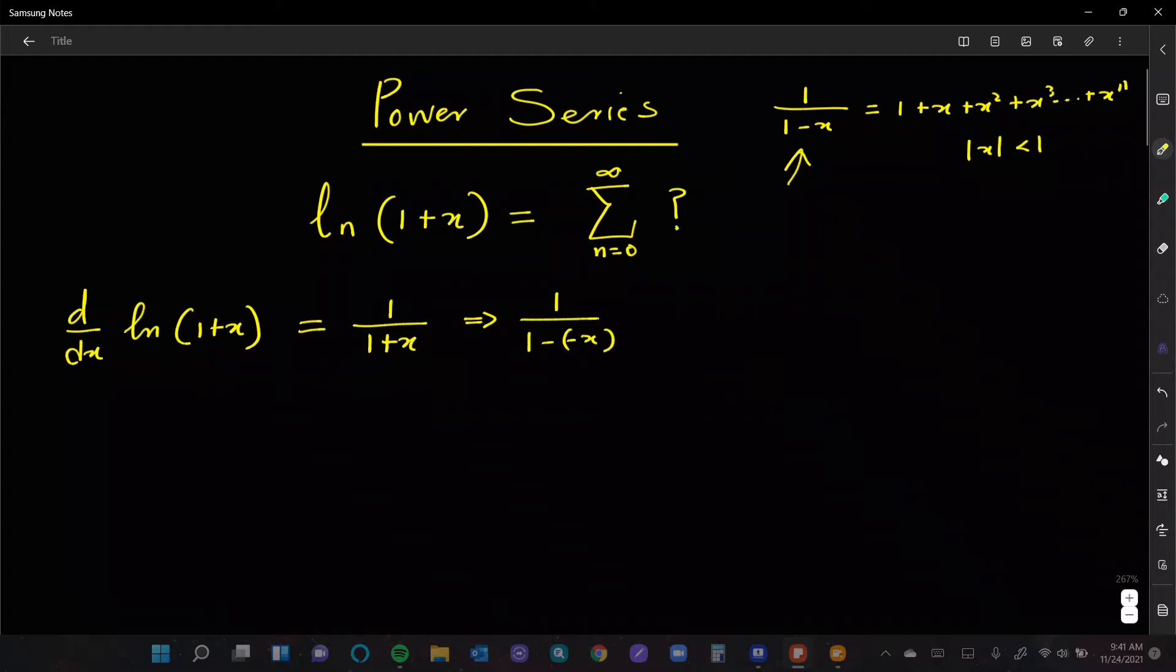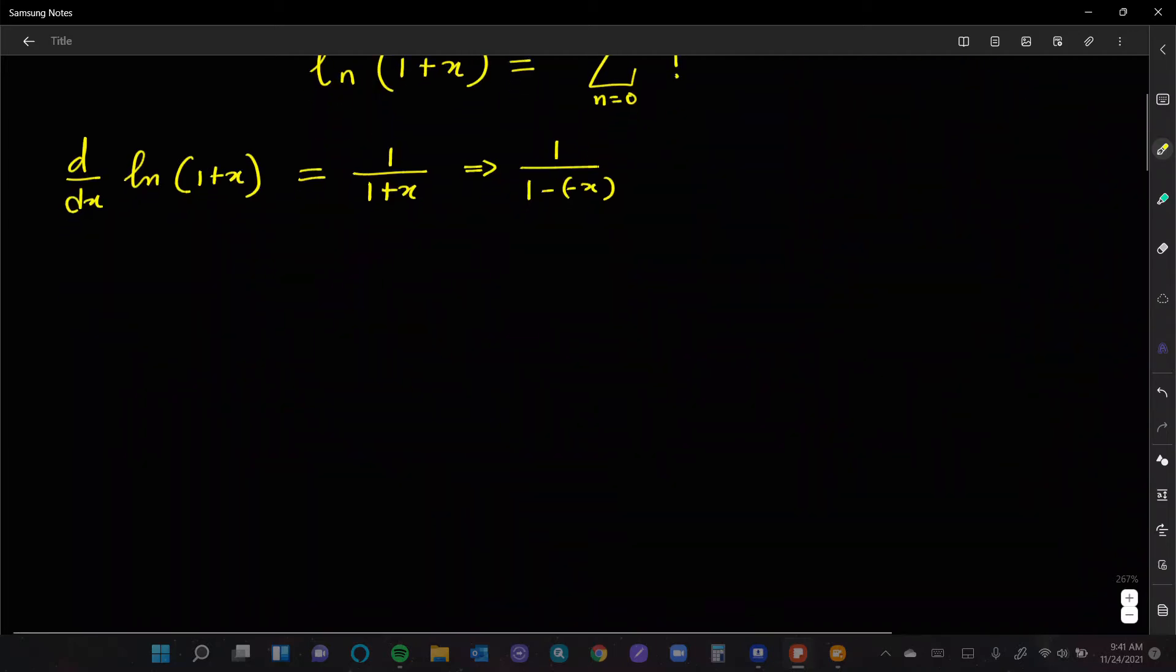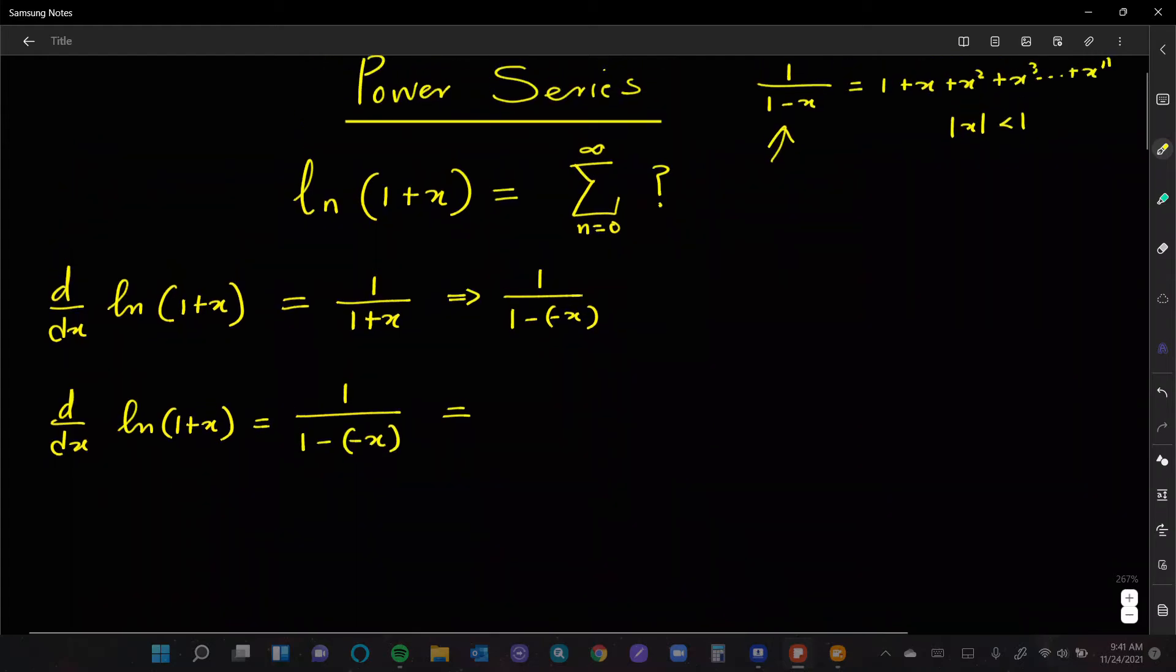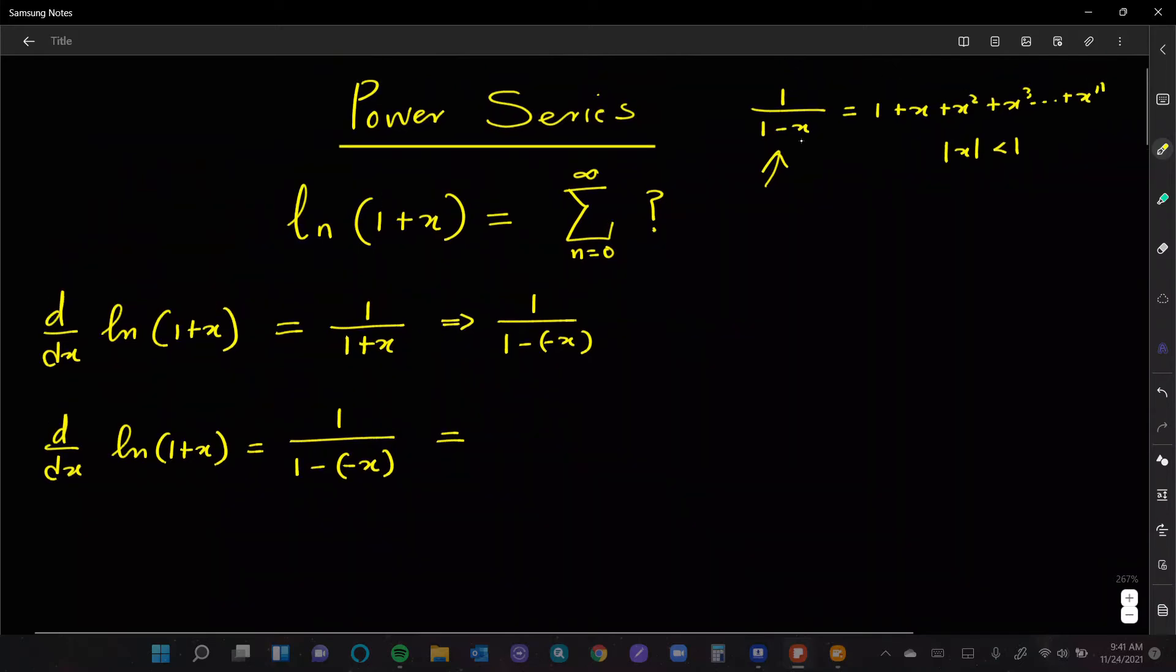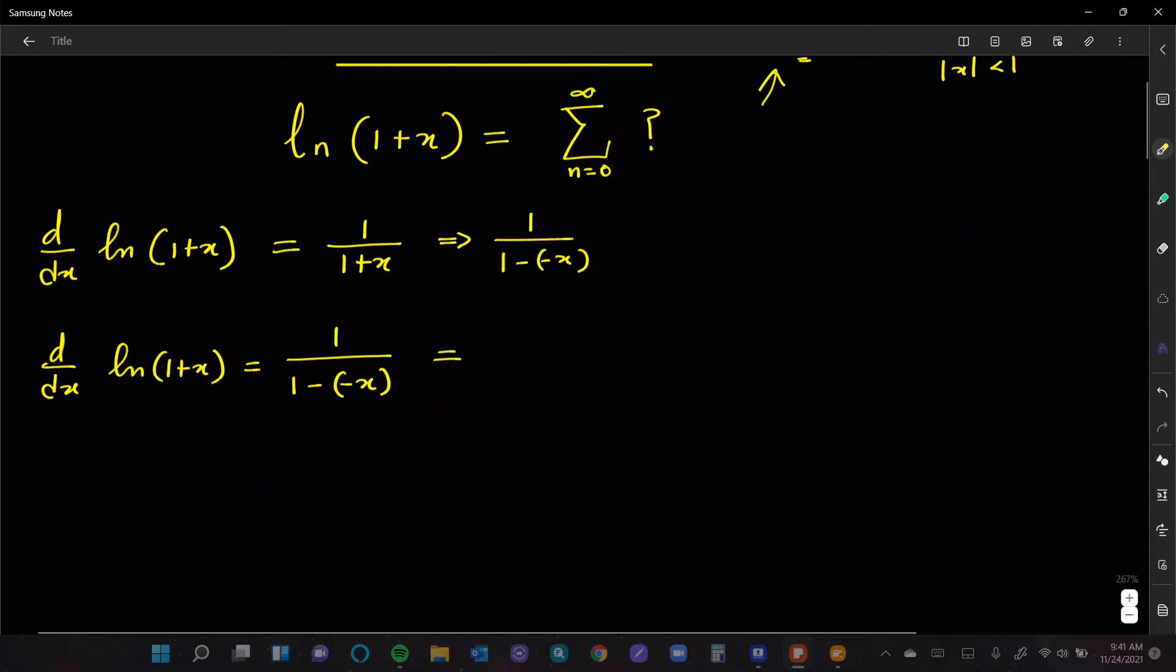So based on this, we can say that the derivative of the natural log of 1 plus x can be written as 1 over 1 minus negative x, which we can now apply this rule to. Remember, all we were doing here was just plugging in x into this polynomial expression.